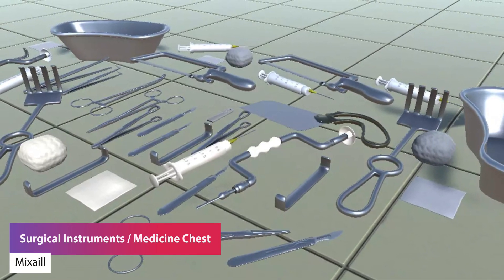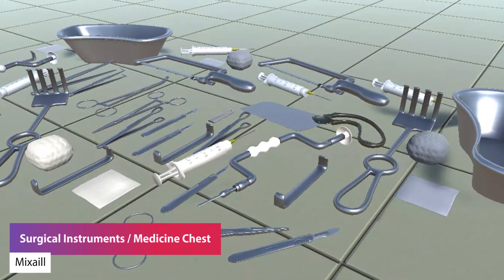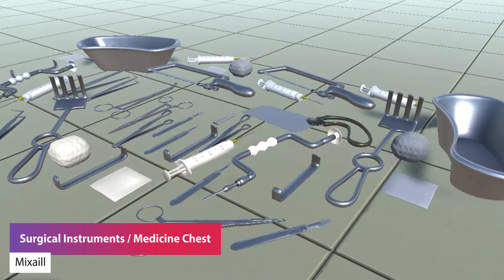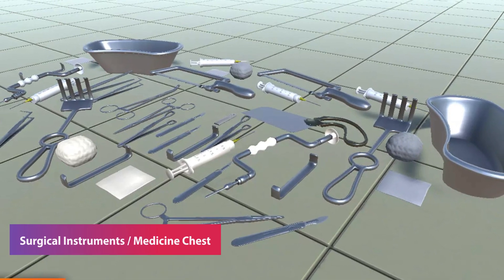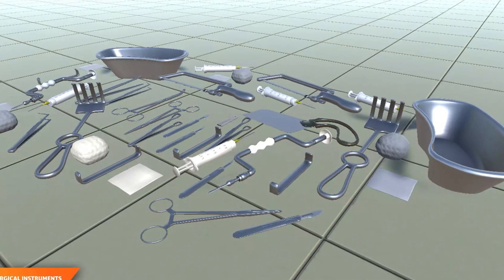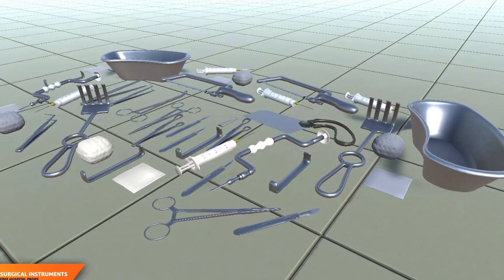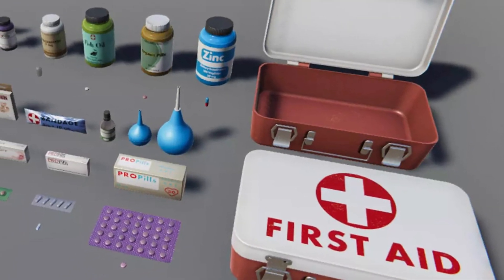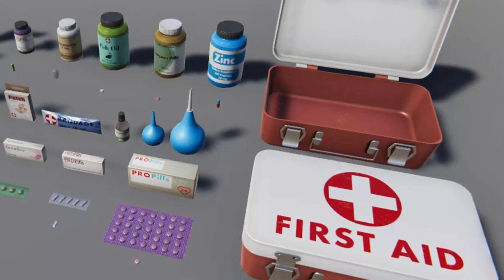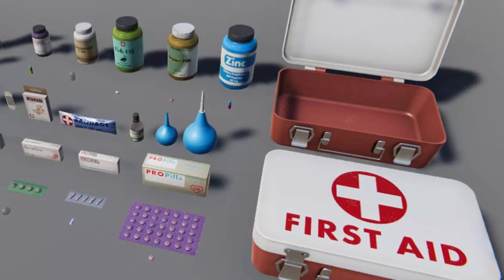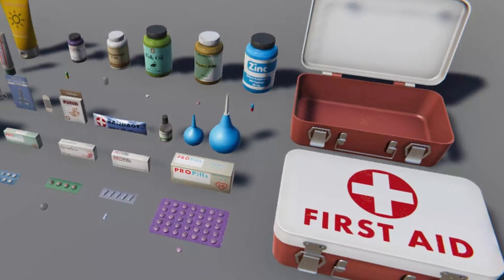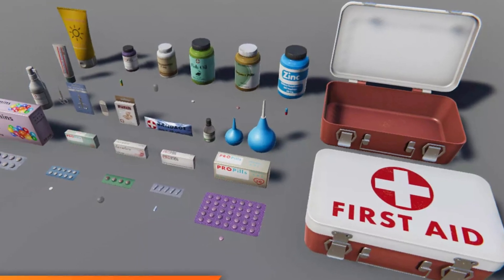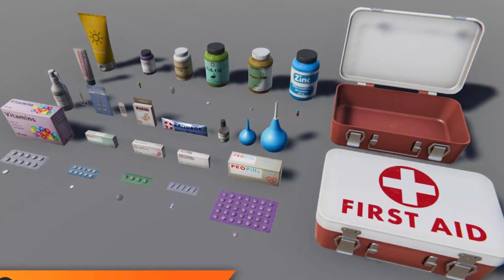The next two I'll combine: the surgical instruments and the medical chest set of props. The surgical props pack has 17 different props including injections, scalpel, scissors and specific things for surgeries. The medical pack includes tablets, boxes, vitamins, a first aid box and more.